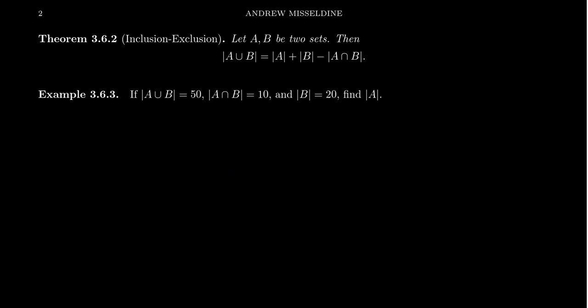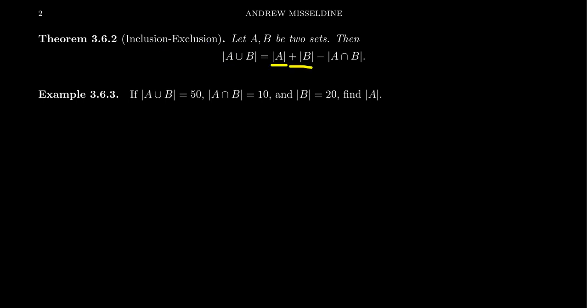This example motivated what we call the principle of inclusion-exclusion. What it does is allow us to compute the cardinality of a union: the cardinality of A∪B equals the sum of their cardinalities minus their intersection. We call it inclusion-exclusion because we include all of the sets, but then we have to exclude the intersection because we overcounted it. As long as you know the relevant cardinalities, you can apply it.